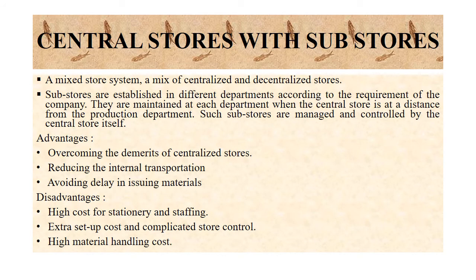The third way is the impressed system, also called central stores with sub-stores. This is a compromise between centralized and decentralized stores. In large factories where departments are situated at a distance from the central store, sub-stores — in addition to the central stores — are located nearest to the production department to reduce transportation and material handling costs.